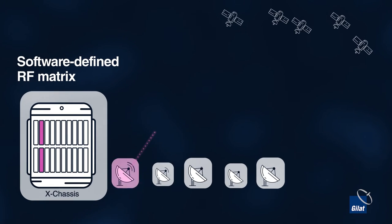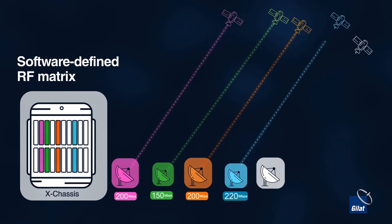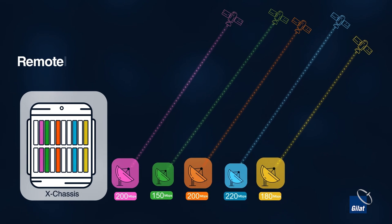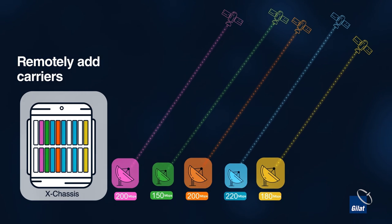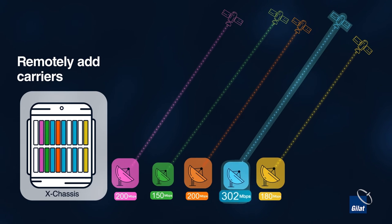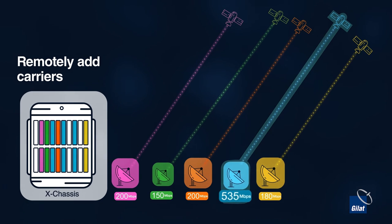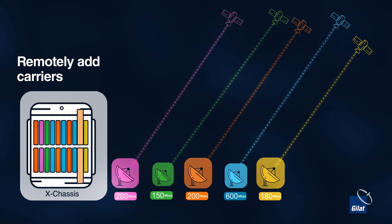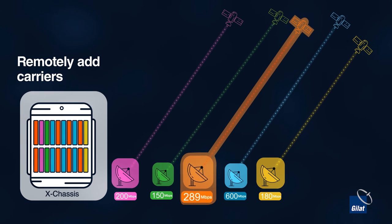Our innovative software-defined RF matrix simplifies network operation. As your business grows, you can remotely add carriers for increased capacity. In fact, you can remotely add carriers for as many as five satellite interfaces on a single hub.